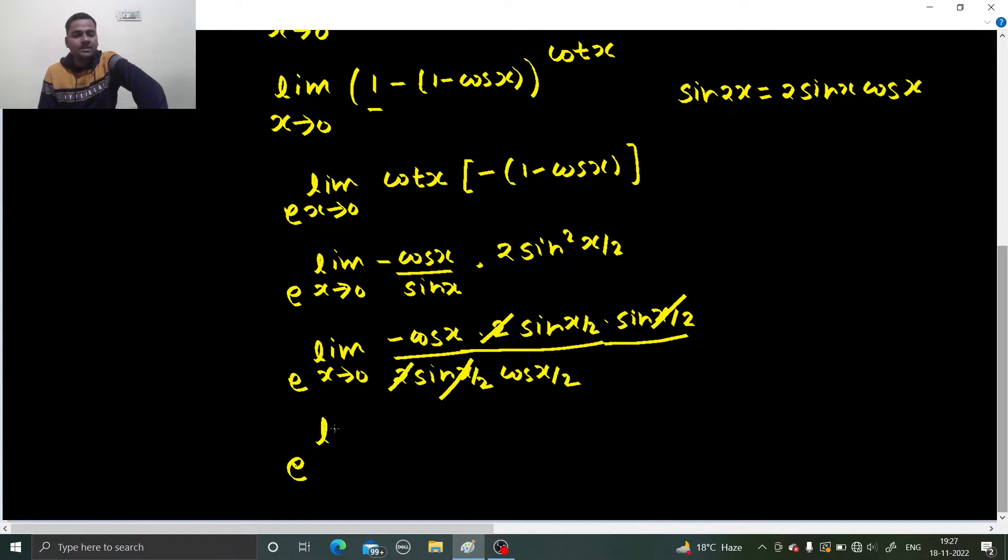So e power limit x tending to 0, minus tan x by 2 and we have a cos x. So when x approaches to 0, this tan x by 2 will become 0 because tan 0 is 0, cos 0 is 1, so 0 into 1 will give you 0 into minus 1, so 0 only. So e power 0, which is giving you 1 as your final answer.